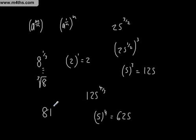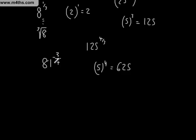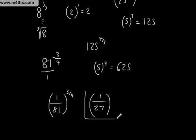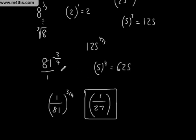81 to the negative 3 over 4. Hopefully this will get you thinking. Let's first write it as 1 over 81 to the 3 over 4. We take the 4th root of 81, which is 3. 3 cubed is 27, so we end up with 1 over 27. And we're now up to the top end of GCSE with negative fractional indices. So, I've just combined the two rules.